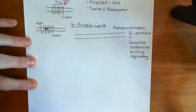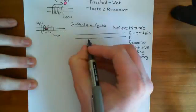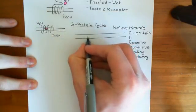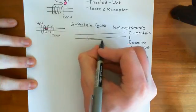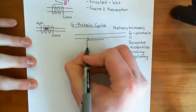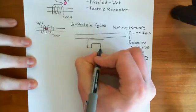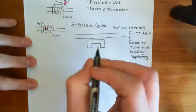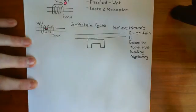Heterotrimeric G-proteins are going to consist of three subunits, which are all different. They have an alpha subunit, a beta subunit, and a gamma subunit. I'm going to start off discussing alpha subunits — I'll draw my alpha subunit here. Alpha subunits of heterotrimeric G-proteins are rather special. They have two states, like all G-proteins.